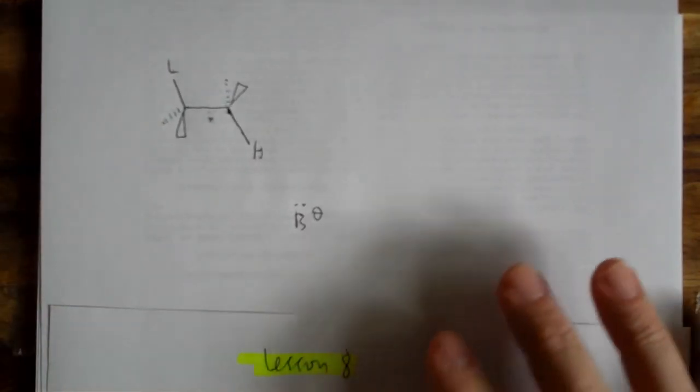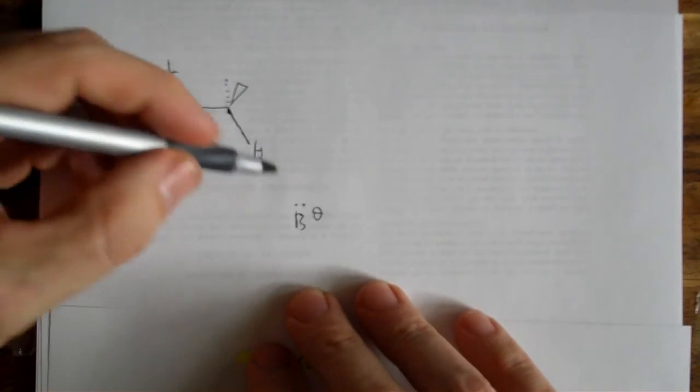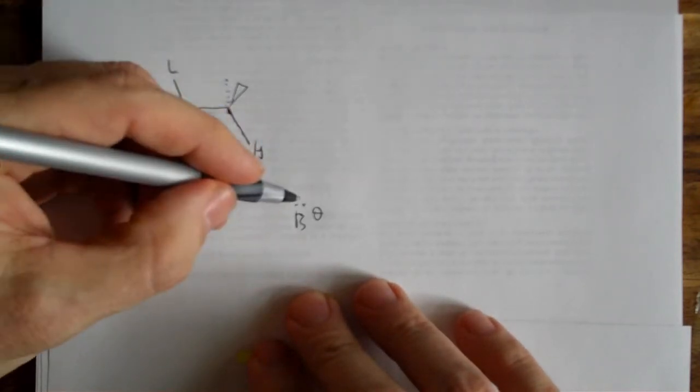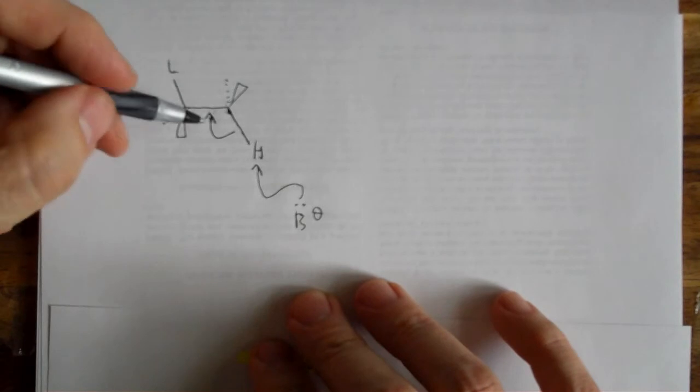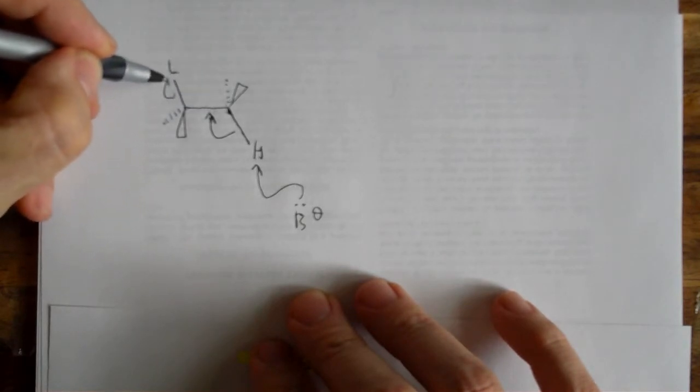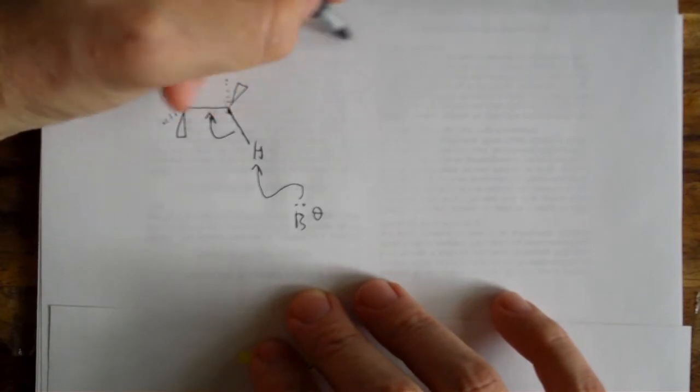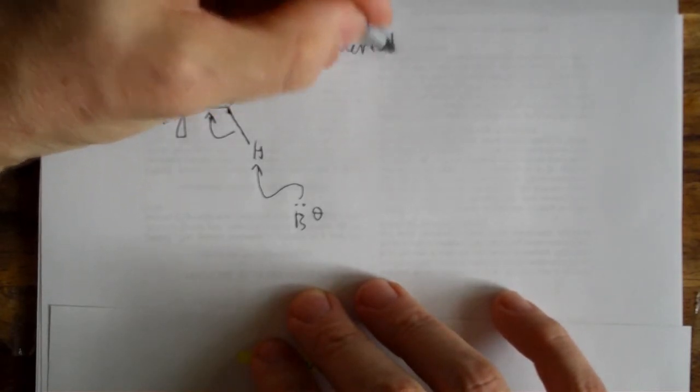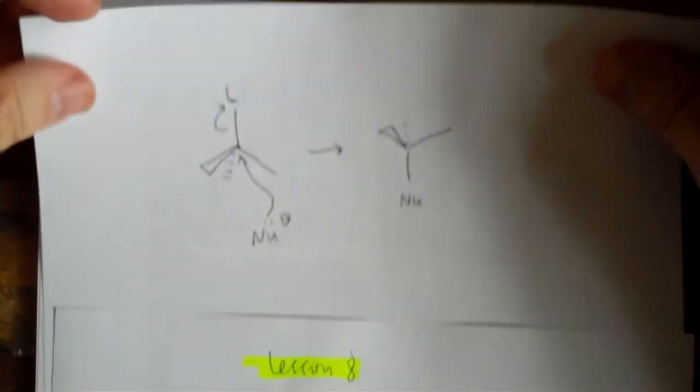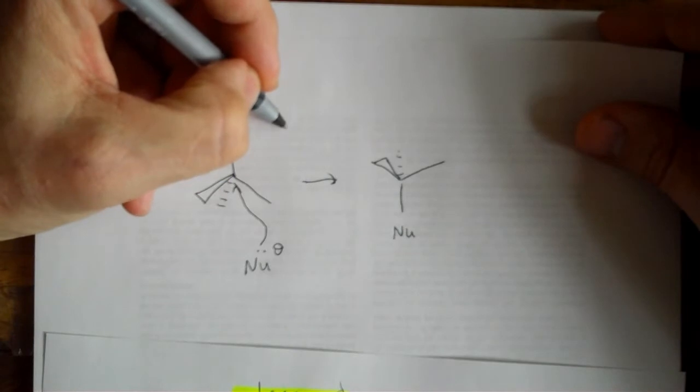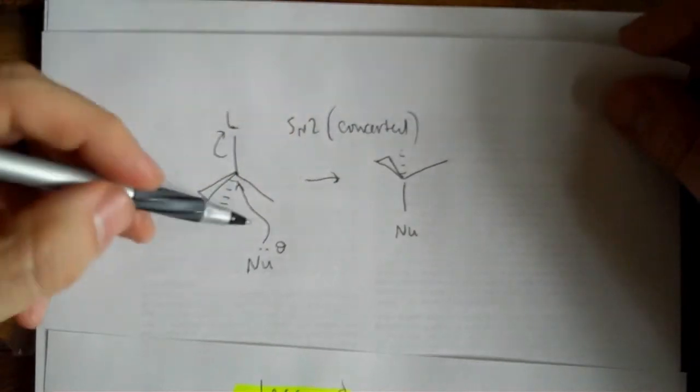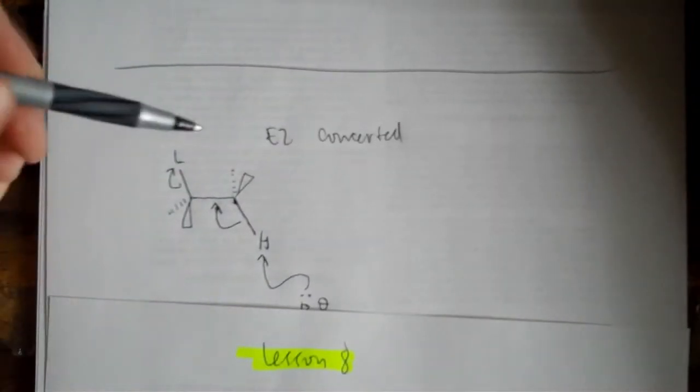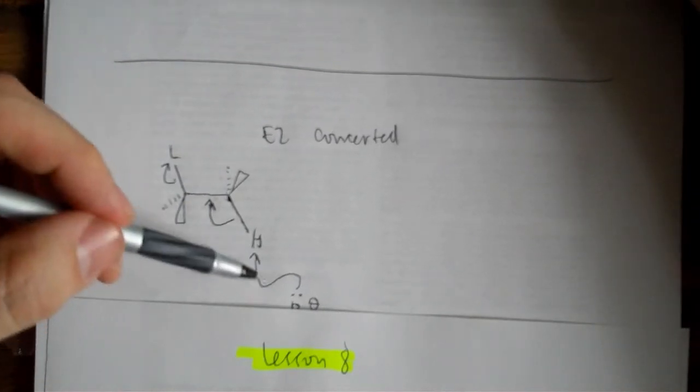Eliminations are similar in some ways but the E2 reaction for example is going to take a base, is going to come up, abstract a proton, those electrons are going to become pi electrons and the leaving group leaves. If this is E2 this is all concerted. If this is E1, I'm sorry this is SN2, SN2 these are also concerted. In other words these electron movements happen at the same time and in an E elimination these all happen at the same time.